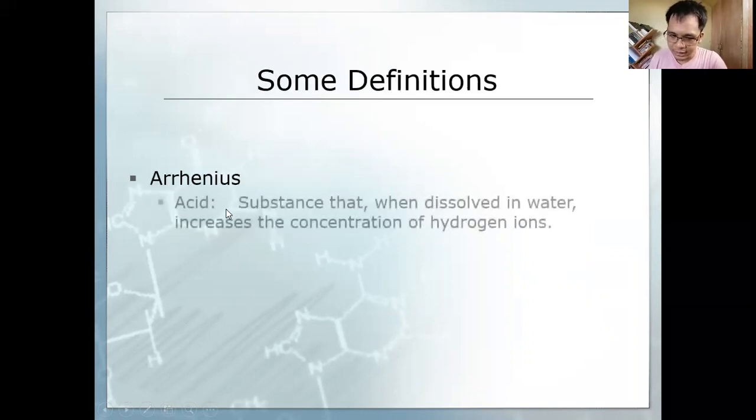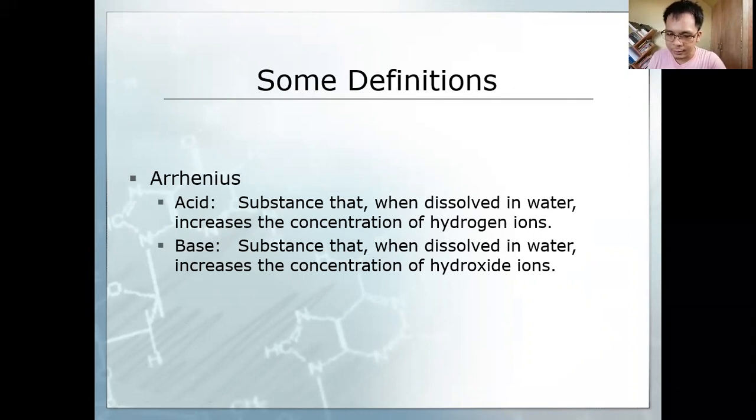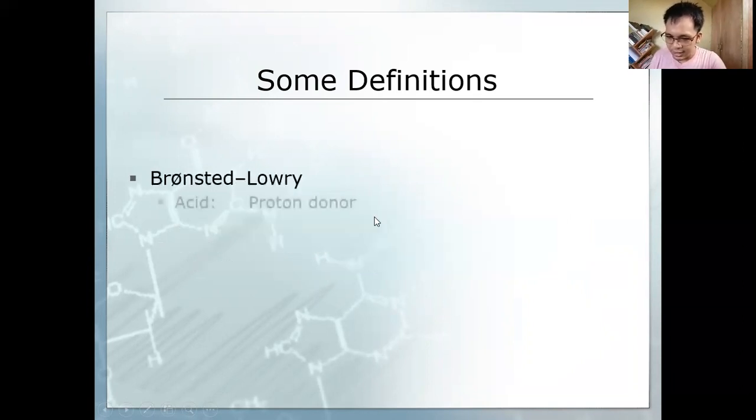Let's start with Arrhenius. His definition of acid is a substance that gives hydrogen ions when dissolved in water, while base is a substance that gives up hydroxide ions when dissolved in water. That is the definition of Arrhenius: hydrogen ion and hydroxide ions.